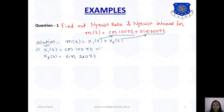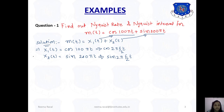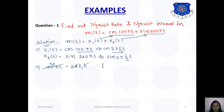Now comparing with the standard equation cos(2πft), we can obtain the frequency values. For x1(t): 100πt = 2πF1·t, so 2πt cancels out giving F1 = 50 Hz. Similarly for x2(t): 200πt = 2πF2·t, so F2 = 100 Hz.